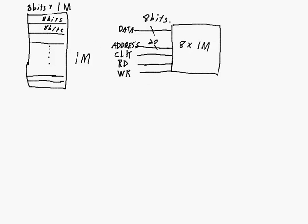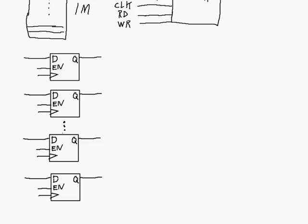Because we're going to zoom in on one of these locations in memory. One of these locations will be selected by the value of the address — if the address is all zeros it accesses memory location zero, if the address is all ones it accesses the highest numbered address. If we zoom in on just one of these blocks, one way we could implement it is with a number of D flip-flops.